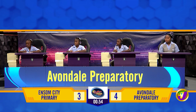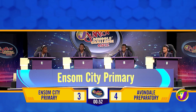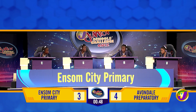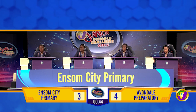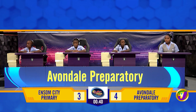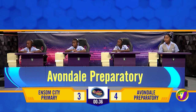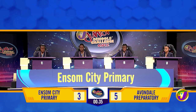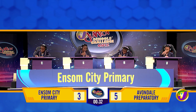Music for Ensom City: what is the name of a musical piece performed by four persons? Quadrat. Incorrect — quartet. Music for Avondale: what is the name given to a group of singers in a chorus or song? Band — choir. Choir — correct!